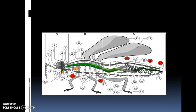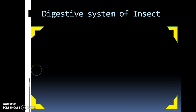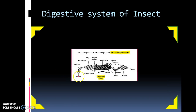The alimentary canal of an insect consists of foregut, midgut and hindgut. The foregut consists of mouth, pharynx, esophagus, then crop which is a storehouse, then proventriculus or gizzard. The midgut consists of midgut cecum, then ventriculus and pyloric Malpighian tubules. The hindgut consists of ileum, rectum and anus.